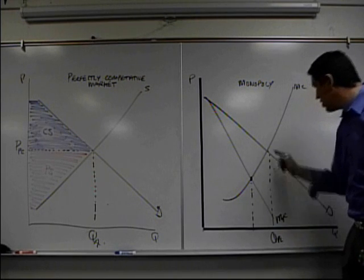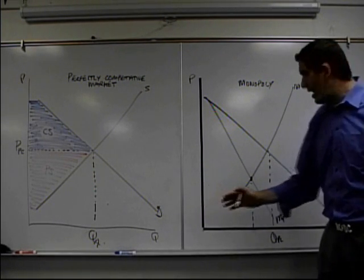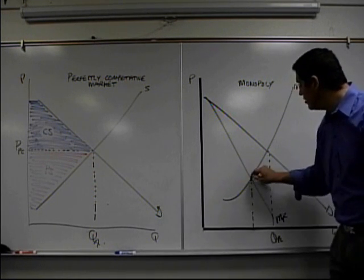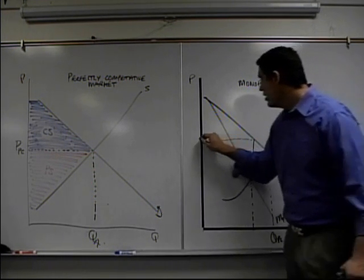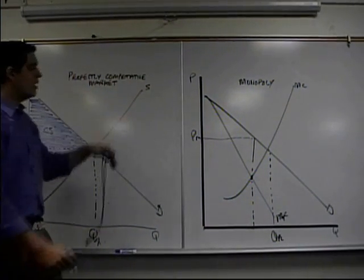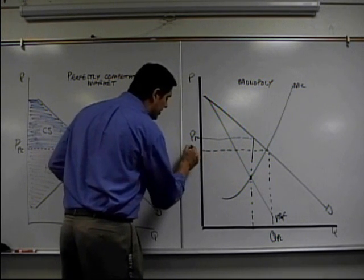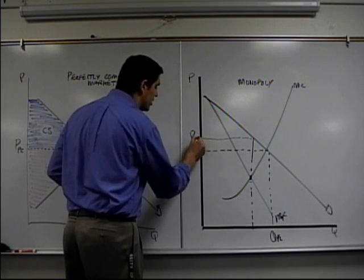So quantity, perfect competition would be here just like it is over here, but monopoly underproduces. And it looks like they charge a lower price. They don't, remember the price is up to the demand curve and over. So this is the price for monopoly. As you can see, the price is higher for monopoly and the quantity is less compared to perfect competition. This is price, perfect competition, here's the price for monopoly.